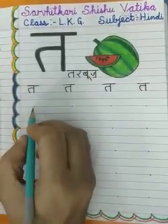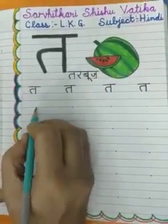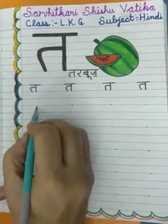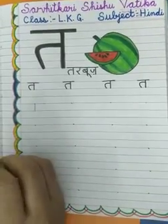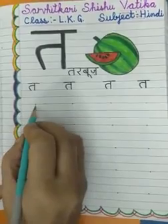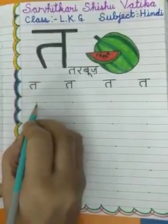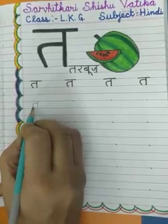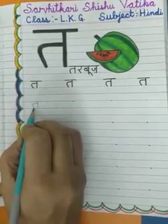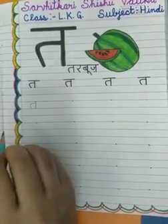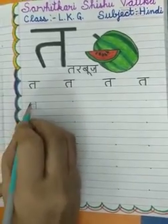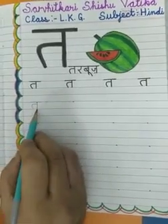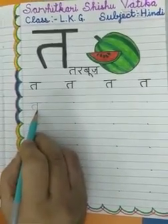First of all, make a standing line from this point. Like this. Make a slipping line. And turn lightly. Turn in round shape. Now, make a slipping line. T. Tarbooz.